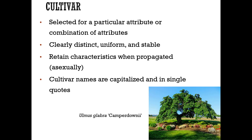Cultivars are selected for a particular attribute or combination of attributes. They are clearly distinct, uniform, and stable, and only reproduce with the same characteristics when propagated asexually — they do not come true to seed. Cultivar names are capitalized and placed in single quotes, for example Ulmus glabra 'Camperdownii'.